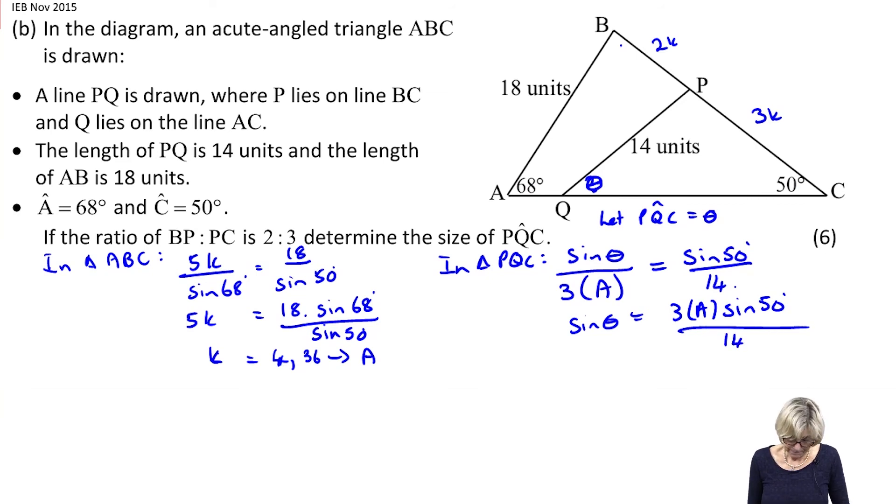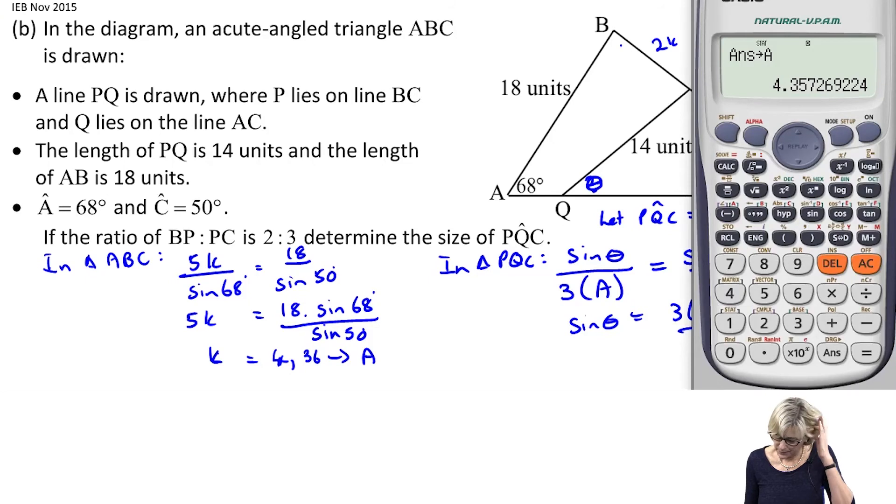Let's type that in. I had 3A, and sine 50, and 14. I'm going to get out of stat mode. So I'm going to have 3 times alpha A times sine 50, close bracket, divided by 14, equals 0.71. Now I've got that on my screen.